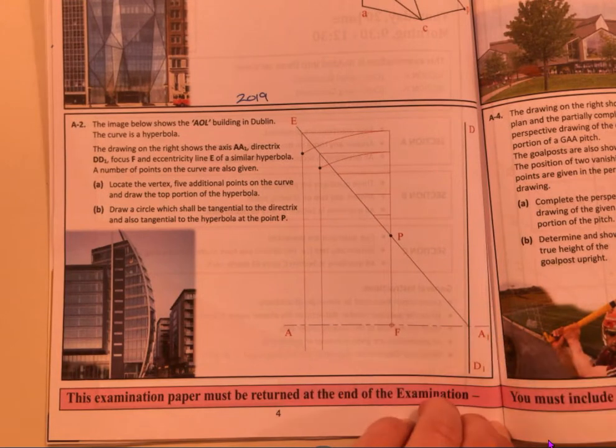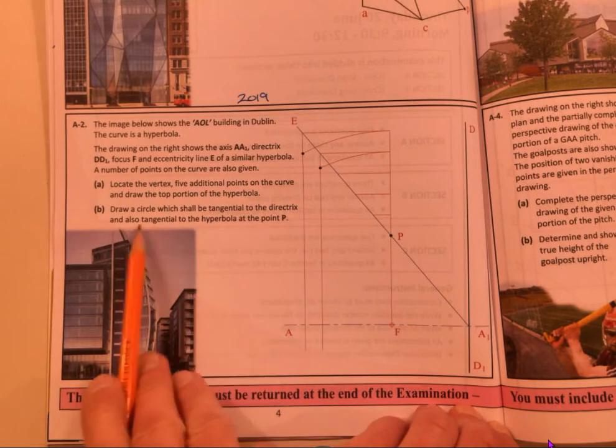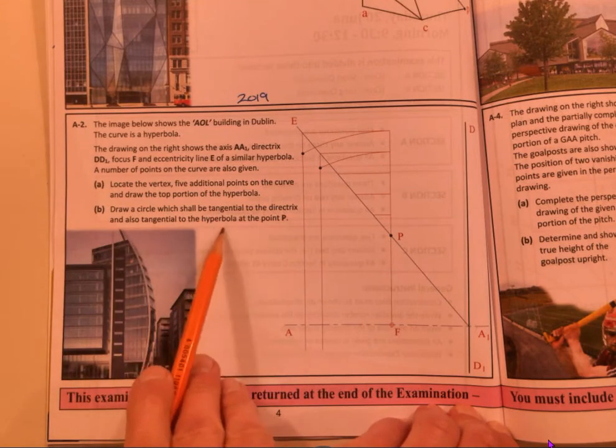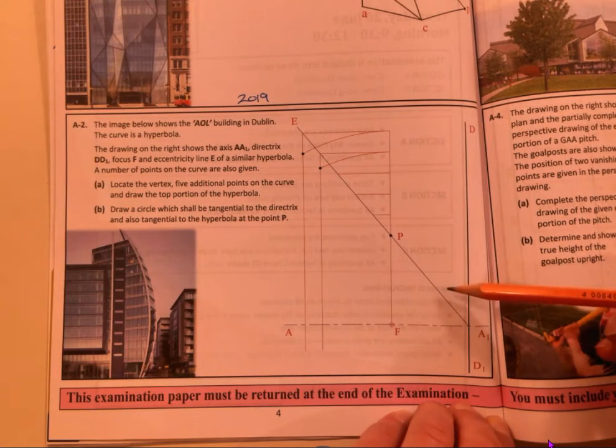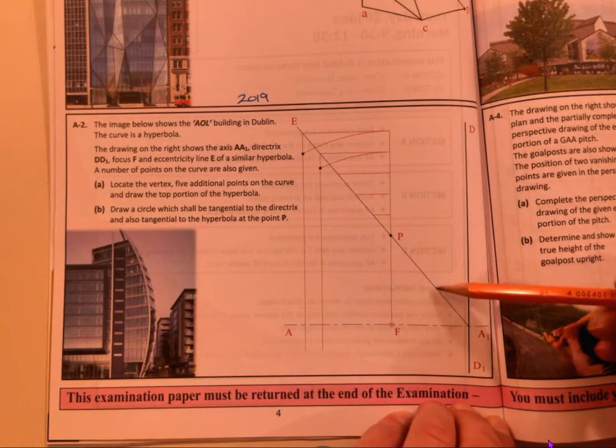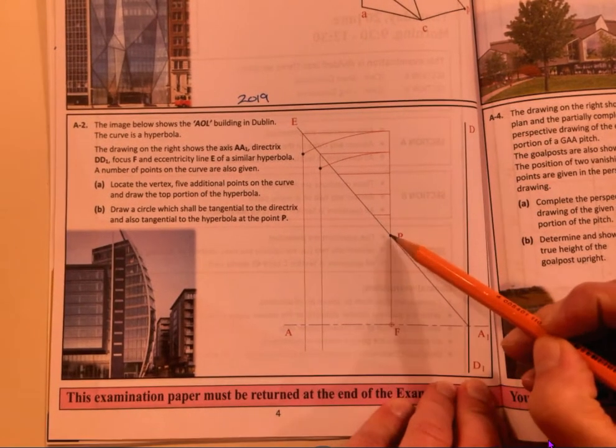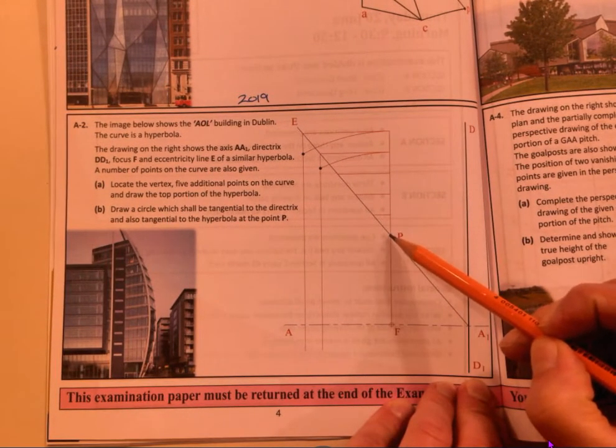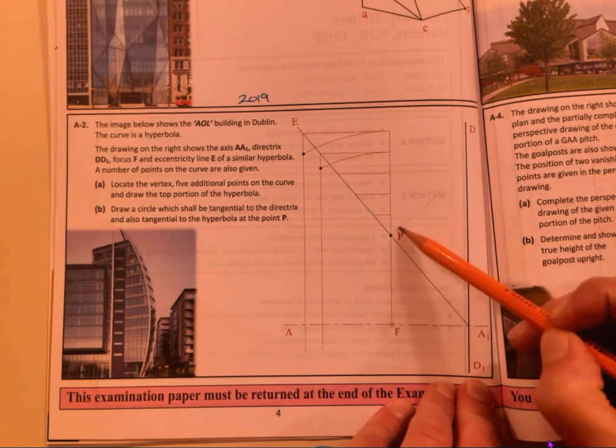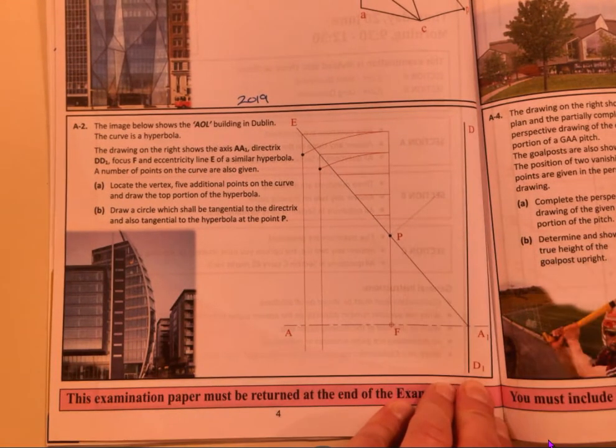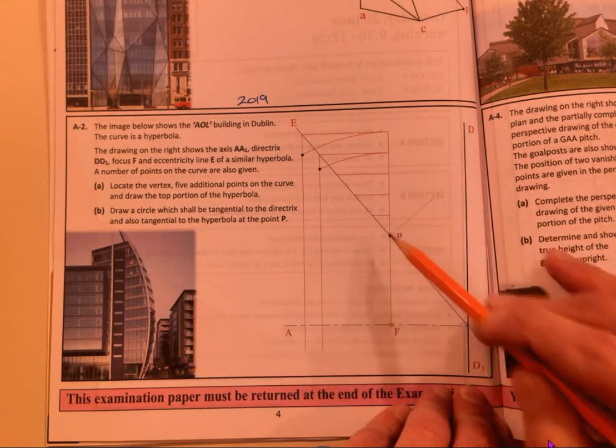Draw a circle which shall be tangential to the directrix and also tangential to the hyperbola at point P. So you have to draw a circle that's going to touch the eccentricity line and directrix. It has to touch it at point P, so the center will be coming through a point somewhere out there. Here is our eccentricity line and you have point P, so the center is going to be somewhere out here.